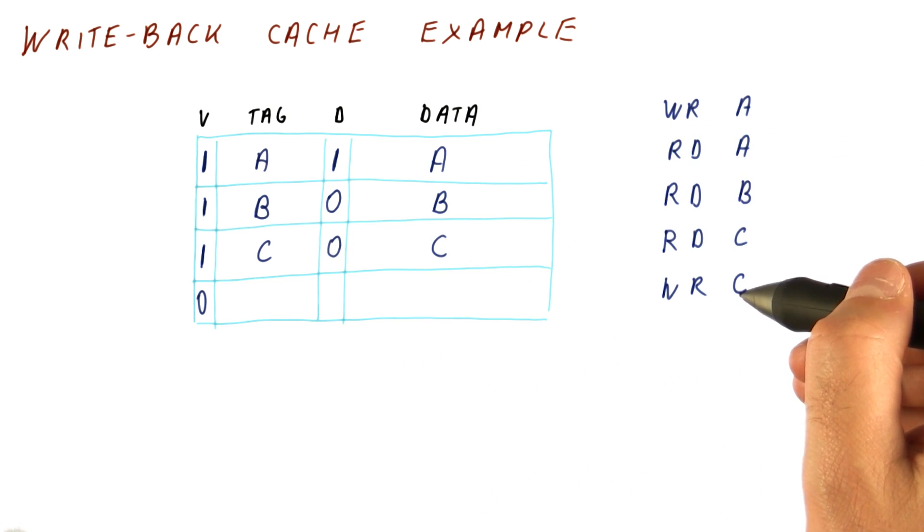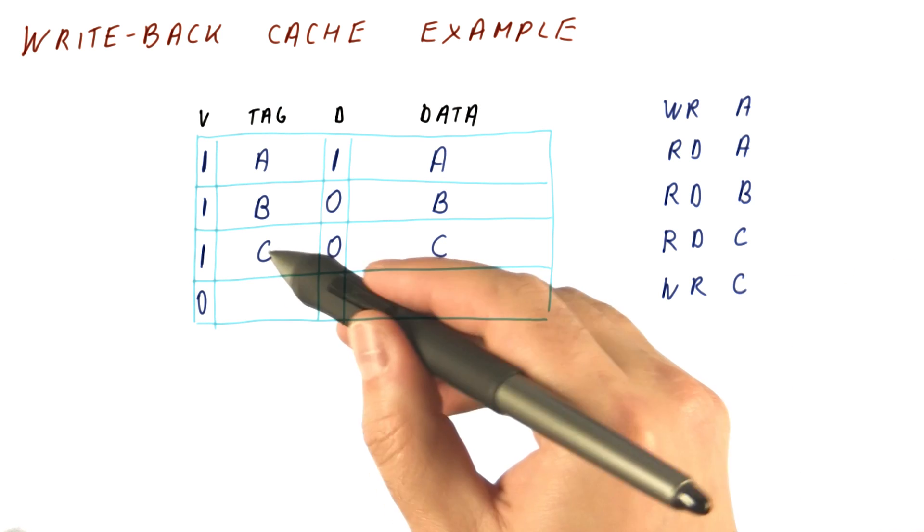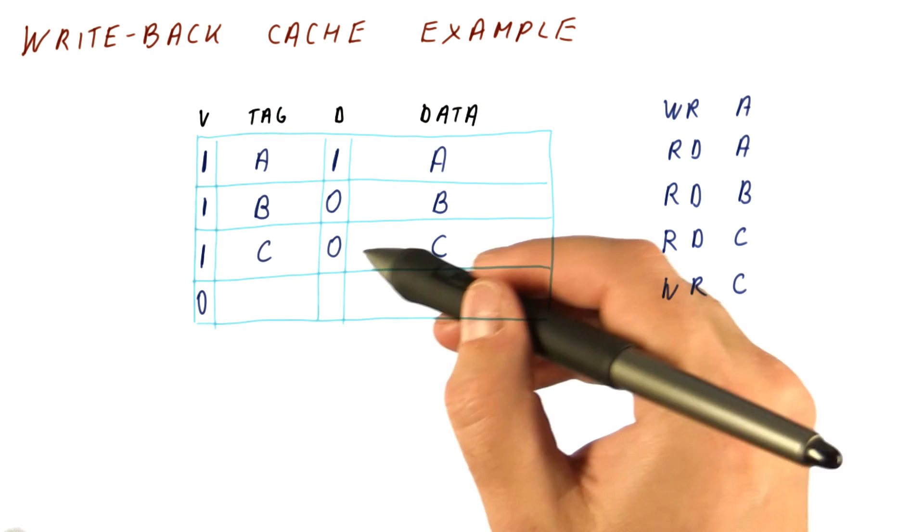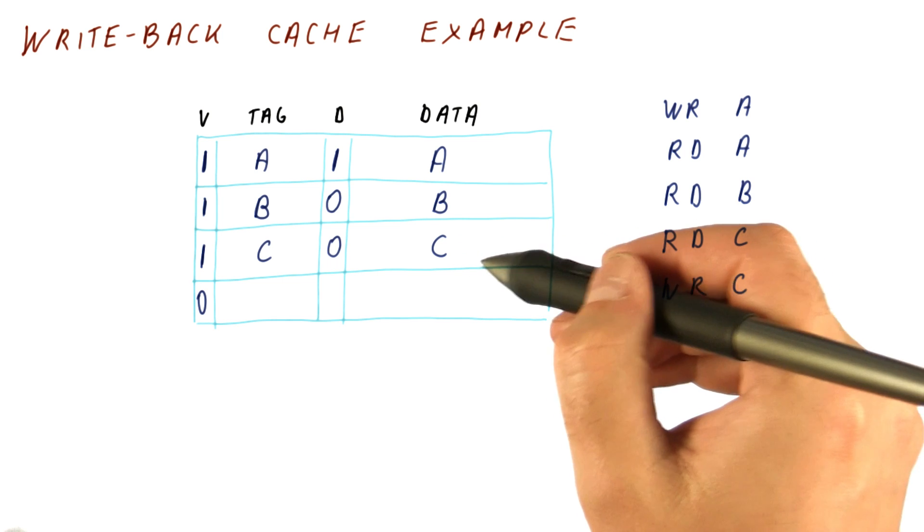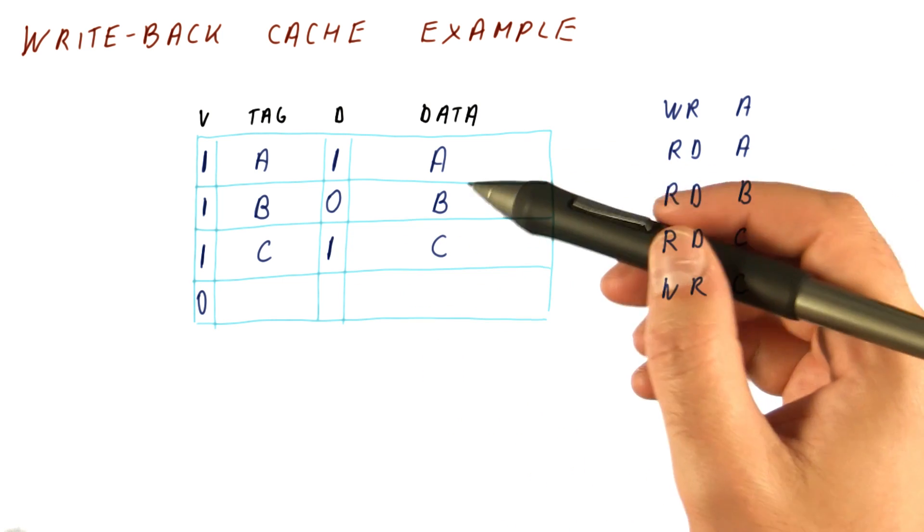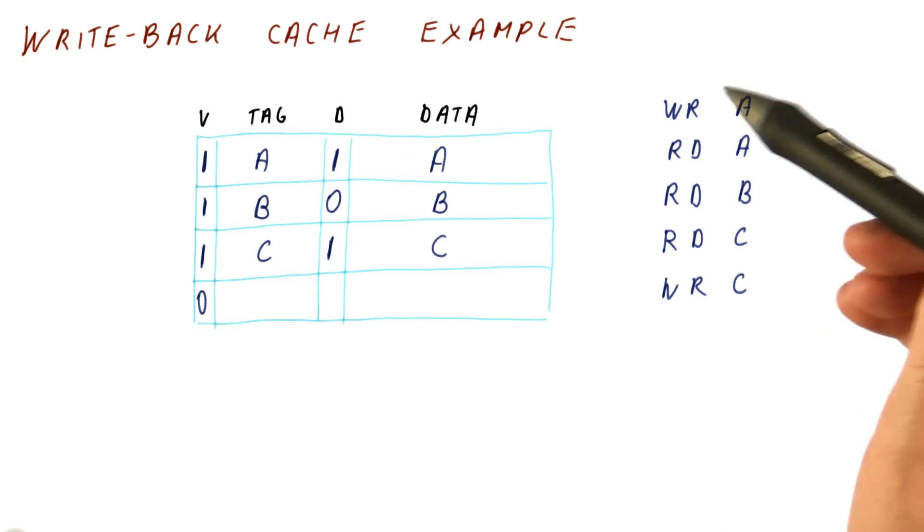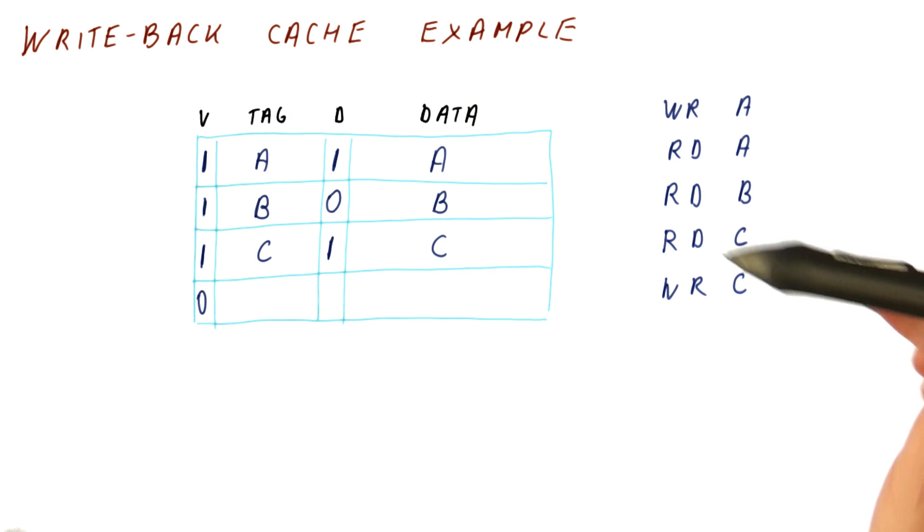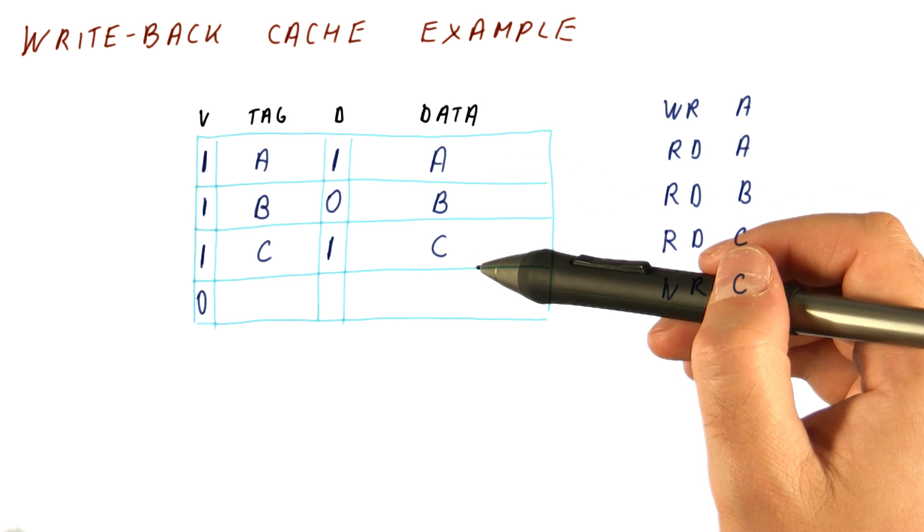Next, what we have is a write to C. We check if it's a hit, and it is. We write only to the cache and change the dirty bit to 1. And now, as you can see, the dirty bit for every line indicates simply, was the line ever written since it was last brought into the cache.